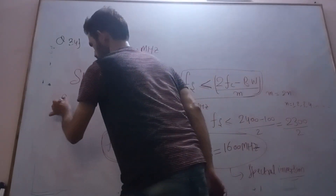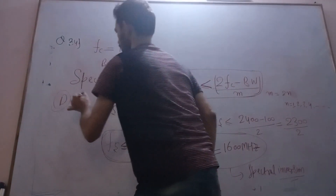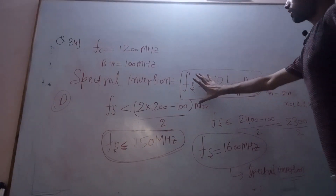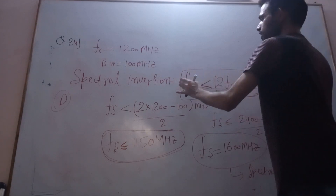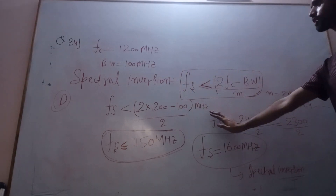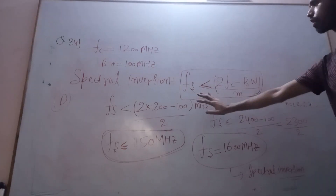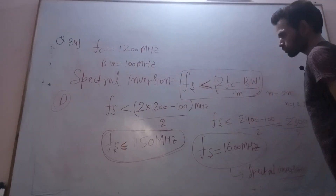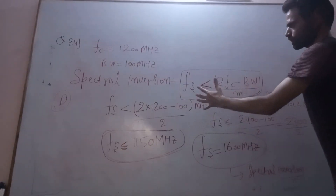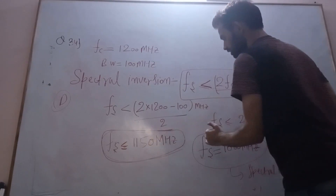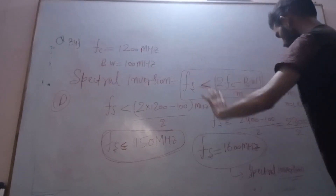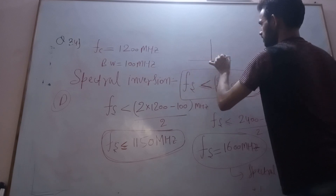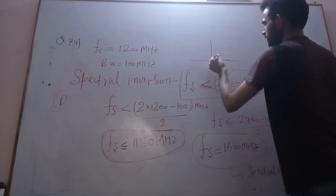Therefore, option B is correct. This is the condition for spectral inversion — to avoid it, the sampling frequency should be less than the threshold. Whatever frequency is greater than 1150 megahertz will cause spectral inversion.